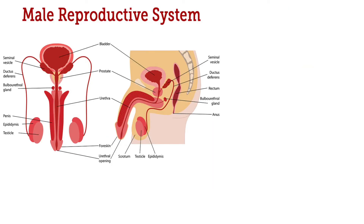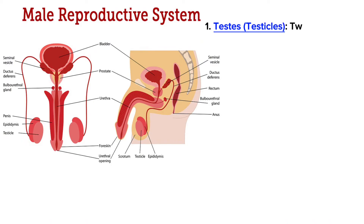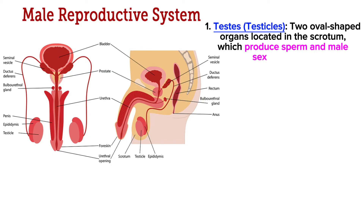The first is the testes, or testicles. In the male reproductive system there are two testes. These are two oval-shaped organs located in the scrotum which produce sperm and male sex hormones, primarily testosterone.